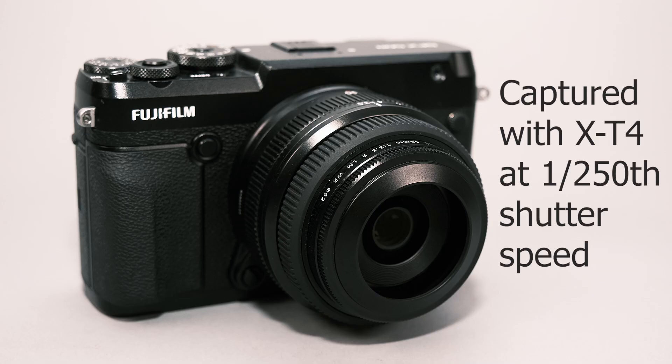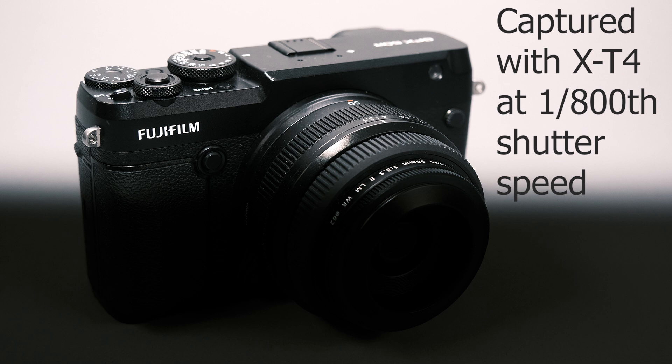This is the fastest shutter speed you can use with a normal flash. Any faster than this and the light from the flash will be blocked by part of the shutter as it starts to close. This part of the image will be dramatically underexposed, as you can see in this photograph.